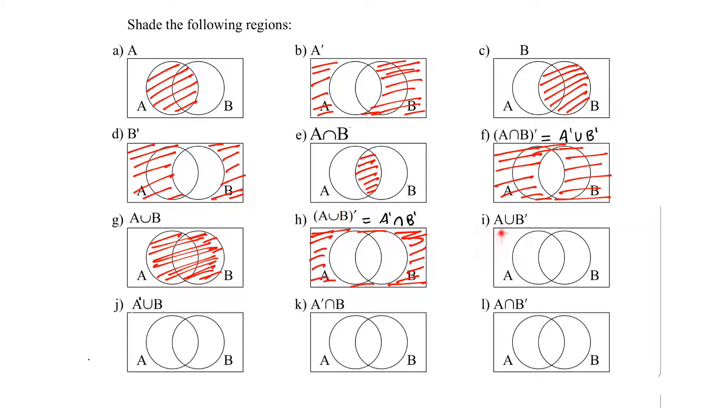Here we have A union not B. In this question we are going to combine not B with all the elements of A. So the only B part will be left unshaded. Everything else will be shaded.